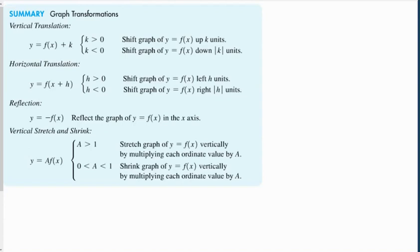So here are the summary for graph transformations. If the number is outside of the functions argument, then it's going to shift it up or down. If it's inside the functions argument, then it's going to shift it left or right. A negative will reflect. And we have this a value, which will either stretch it or shrink it vertically.